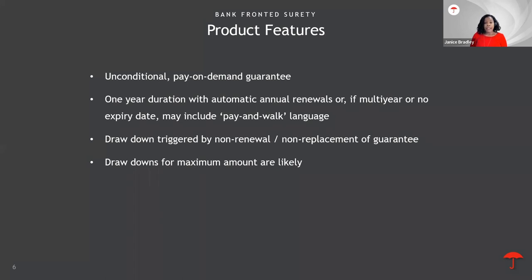Ultimately, the instrument that is issued to the bank is a letter of credit, making the obligation an unconditional pay-on-demand guarantee. The duration of the obligation is one year with automatic and annual renewals. Those evergreen clauses would now come into play. The language contained in the letter of credit has to be approved and agreed upon by the bank. And if there is no expiry date, the letter of credit may contain what is referred to as pay and walk-away language. A non-renewal of the bond will typically trigger a claim or a draw on the letter of credit. And if the bank does draw on the letter of credit, it would most likely be for the maximum penal sum.